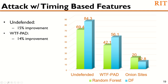Now let's look at the evaluation of our timing features. We don't necessarily expect that timing features alone can provide high enough accuracy. We use both the KFP random forest classifier and DF model for this set of experiments. The DF classifier outperforms the random forest classifier for both the undefended and WTF-PAD datasets. However, random forest wins for the onion sites. The takeaway is that timing features alone have a reasonable classification value.